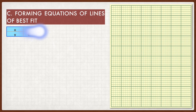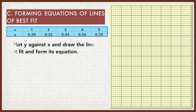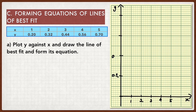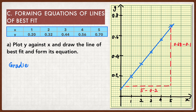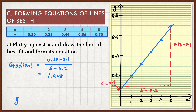Let's look at another example. Plot y against x, draw the line of best fit, and form its equation. From the graph, the gradient of the straight line is 1.208, while the value of c is equal to 0.8. Therefore, the equation of the line of best fit is y equals 1.208x plus 0.8.